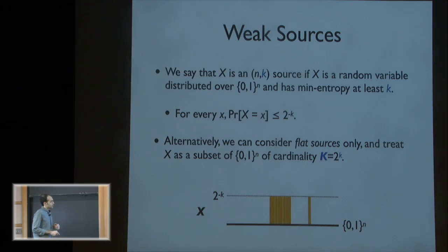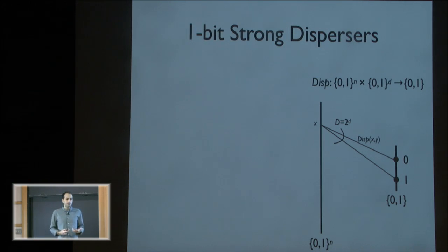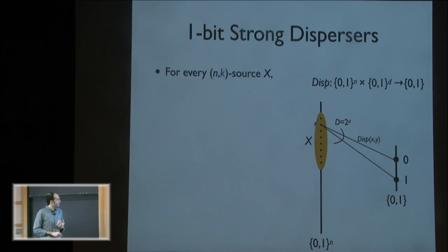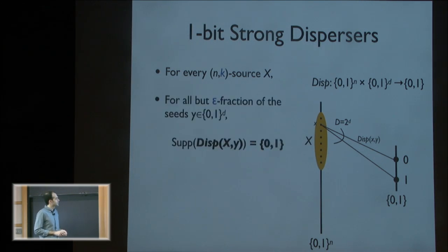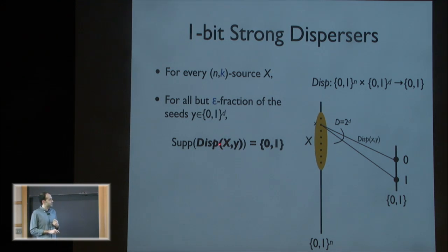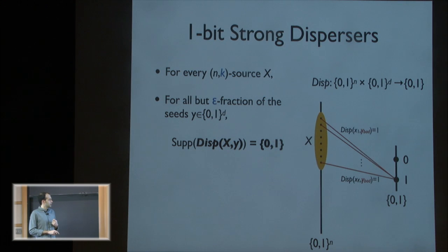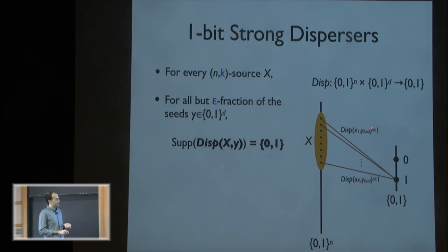In the notion of weak sources, what's a one-bit strong disperser? It's simply that for every (n, k) source X, with k large enough, for all but an epsilon fraction of the seeds, the support of this distribution — for almost every y — is {0, 1}. We may have bad seeds; for example, a seed that maps all of the x's to a single element.